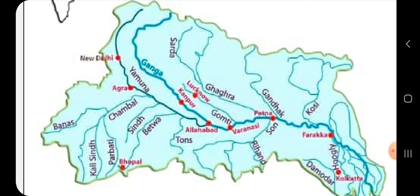The Yamuna, the Gomati, Ghaghra, Gandak and the Koshi rivers join the Ganga from the north. The Chambal, Betwa, Ken, Son and Damodar rivers join her from the south.